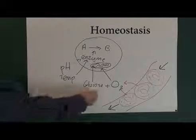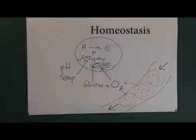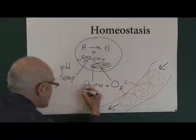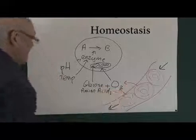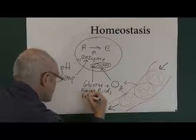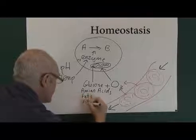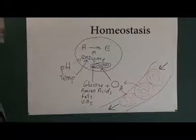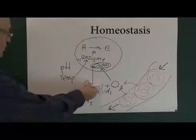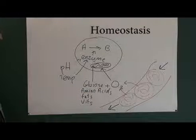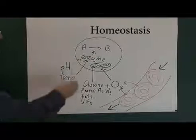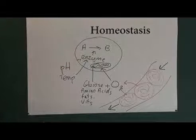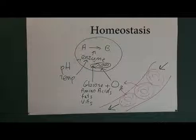As well as glucose, we're going to need other nutrients for biochemical processes — amino acids, fats, vitamins, and minerals. We're going to need a whole range of nutrients to supply the environment in the cell with all the biochemical substrates, all the chemicals needed to facilitate the biochemistry in the cell at just the right rate.